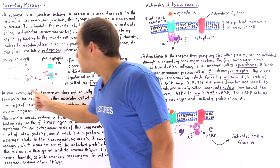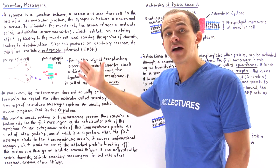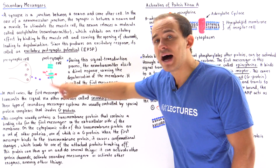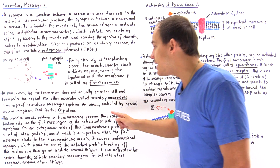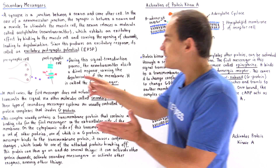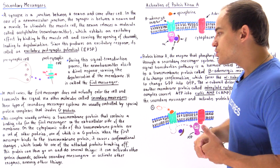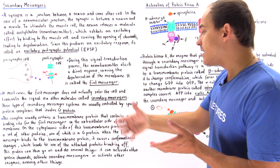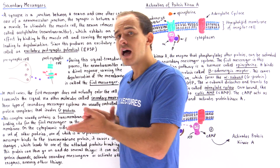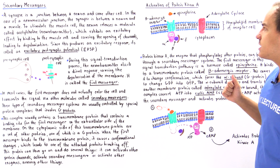The complex of proteins usually contains a transmembrane protein found on the membrane of the receptor cell. This transmembrane protein contains a binding site for the ligand — which is the first messenger molecule — usually located on the extracellular side of the membrane. Once our first messenger binds to this transmembrane protein, other proteins are attached on the other side.